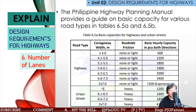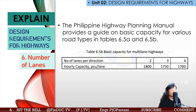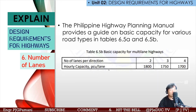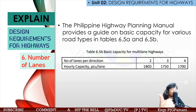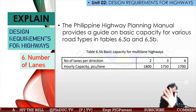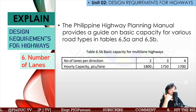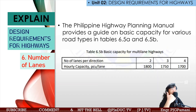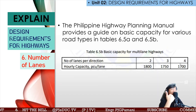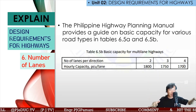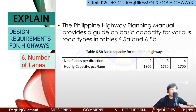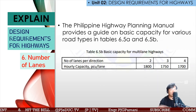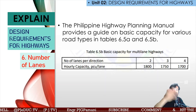Using Table 6.5b, this shows the number of lanes per direction and the hourly capacity in PCU per lane. For two-lane two-way, the minimum is 2,400 PCU total or 1,200 per lane. For four-lane two-way it is 1,800 per lane. For six-lane two-way it is 1,750 per lane. For eight-lane two-way it is 1,700 per lane, with four lanes in each direction.